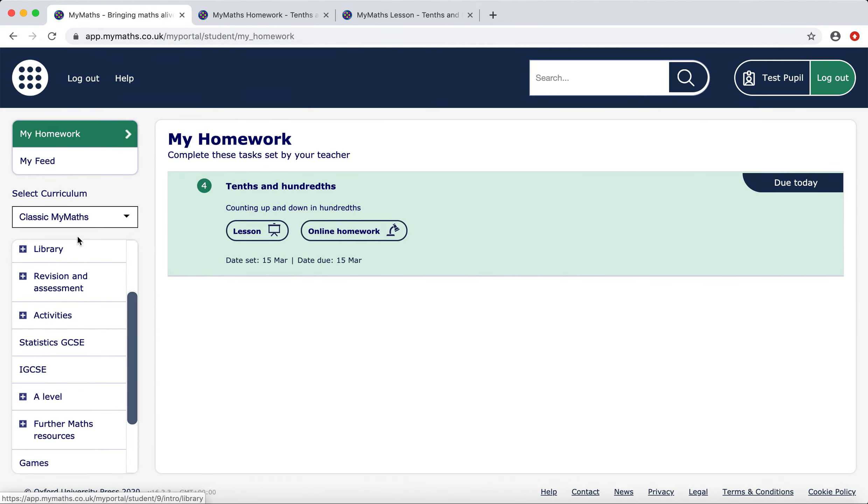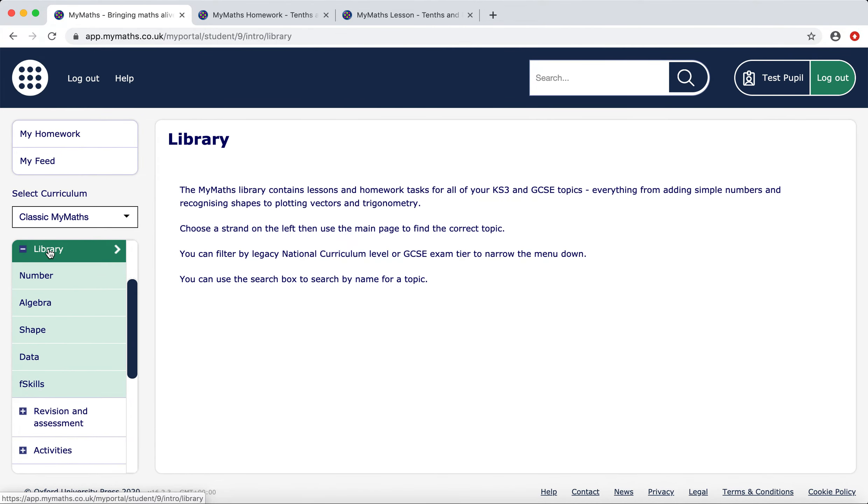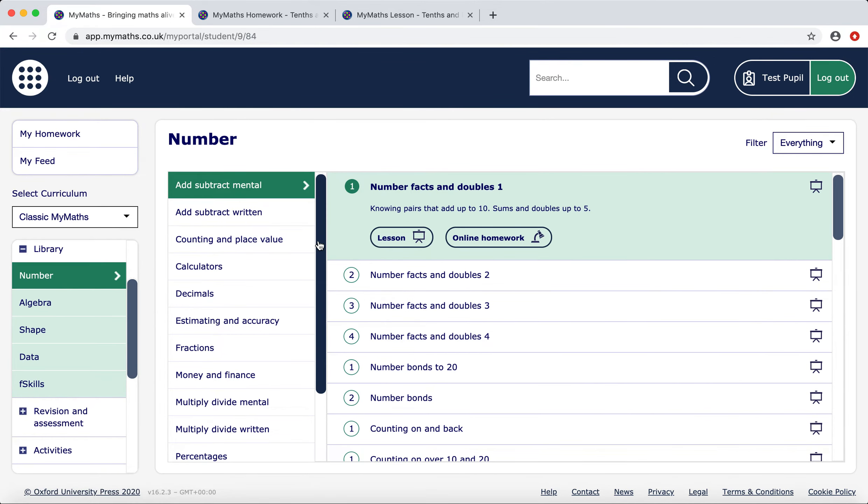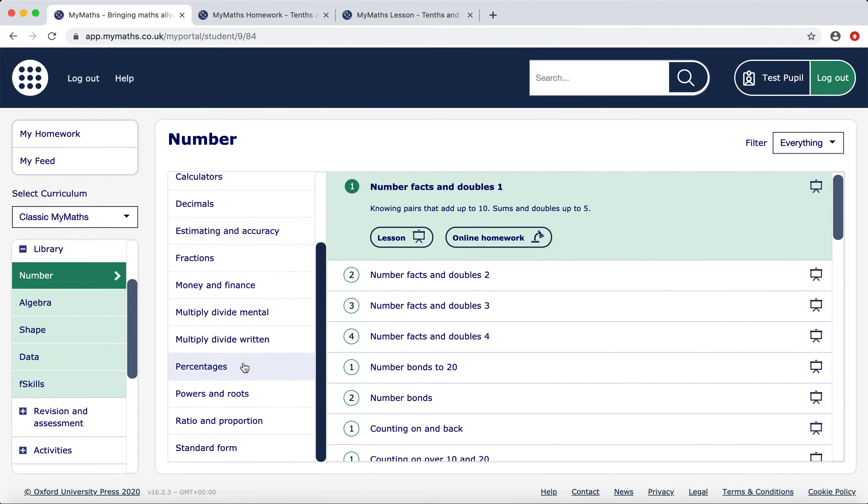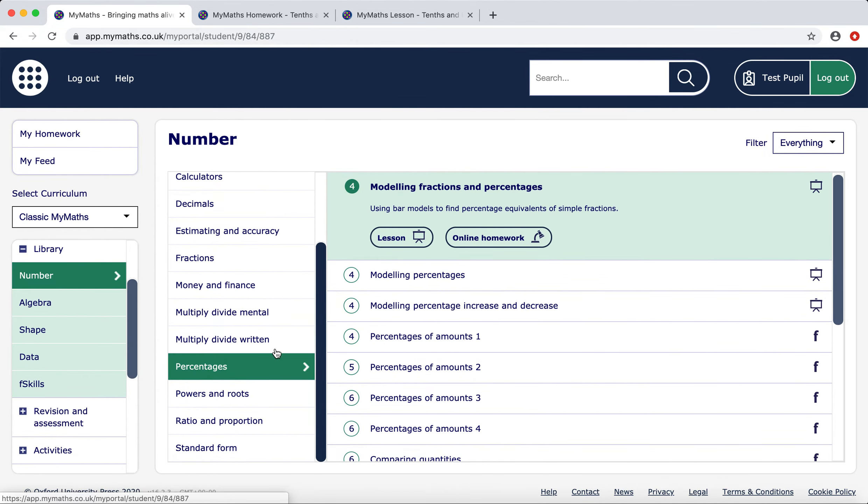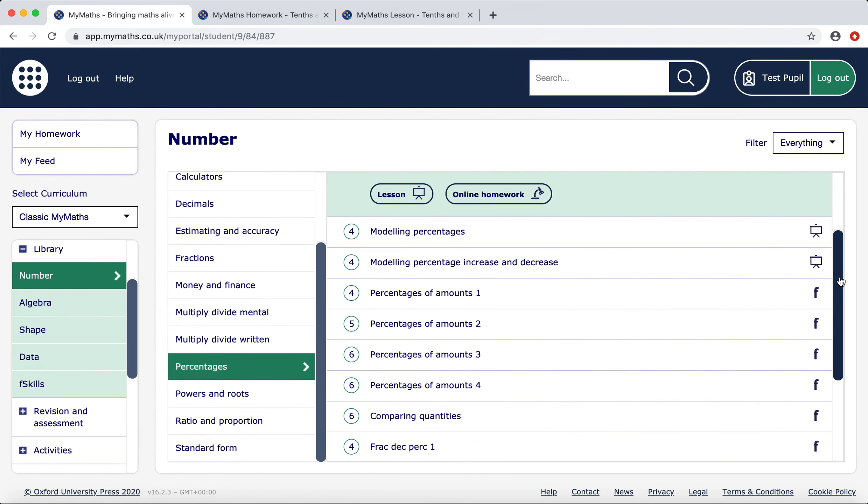Once I've finished my homework, I might want to log into the library. I think I need to practice some percentages too. And I can go down and find percentages. The numbers here will tell you approximately when this would have first been taught in what year group. But there's lots and lots of revision I can use in whichever year group to help me.